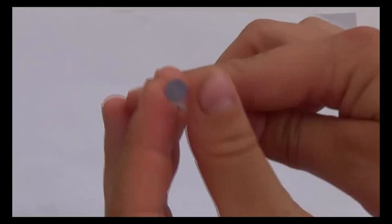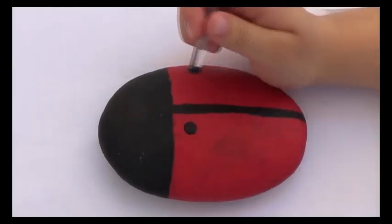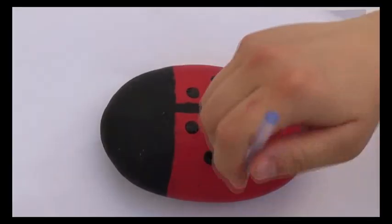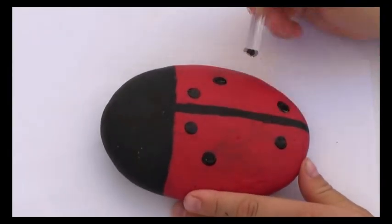To make the spots, I used a glue stick because it has a circular base, but you can use anything else with a circular base.